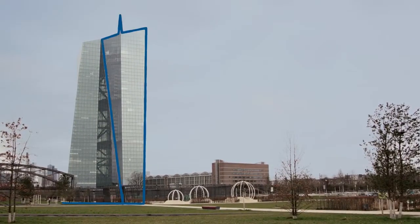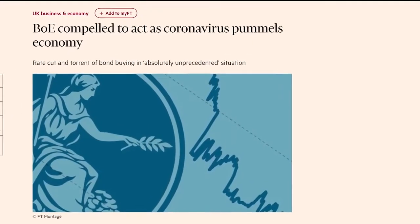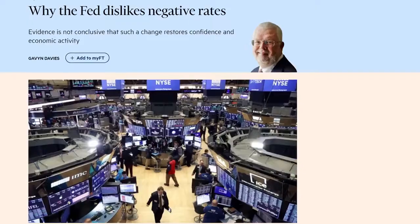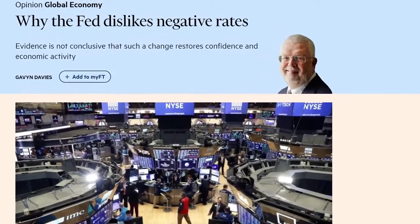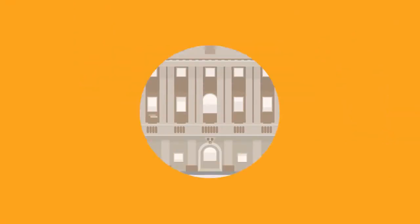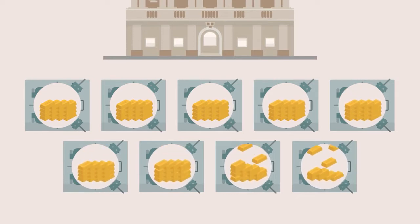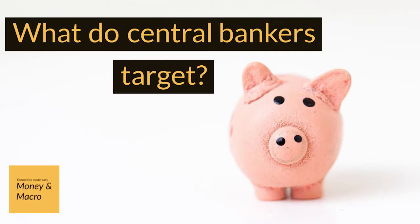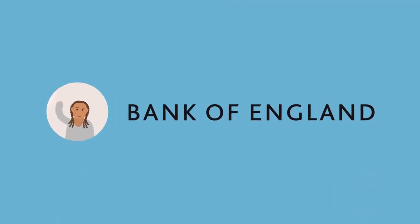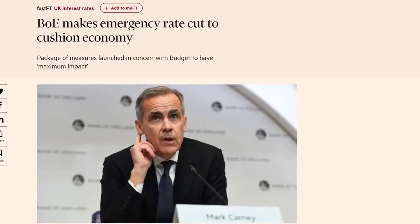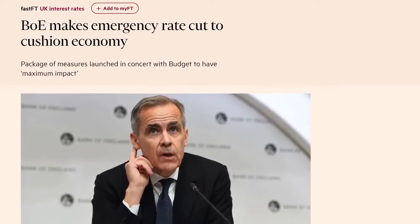The policies that central banks employ to control both the price and quantity of money are called monetary policies. Every time you open a financial newspaper, you will find many headlines concerning how central bankers conduct monetary policy. But what does that actually mean? What do central bankers do when they conduct monetary policy? Most people would say they target the quantity of money. However, this view is hopelessly outdated. Most modern central banks target the price of money — the interest rate.